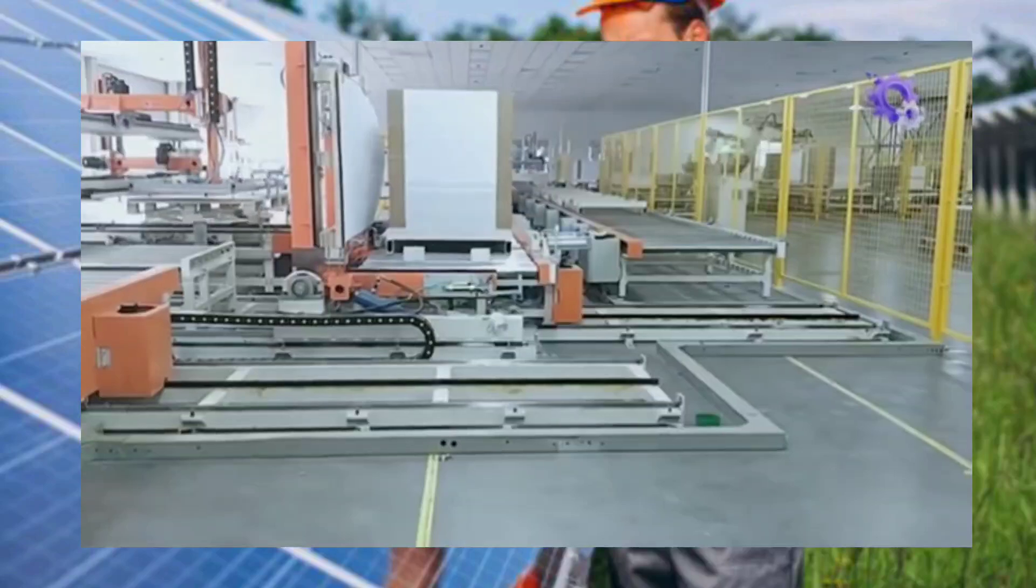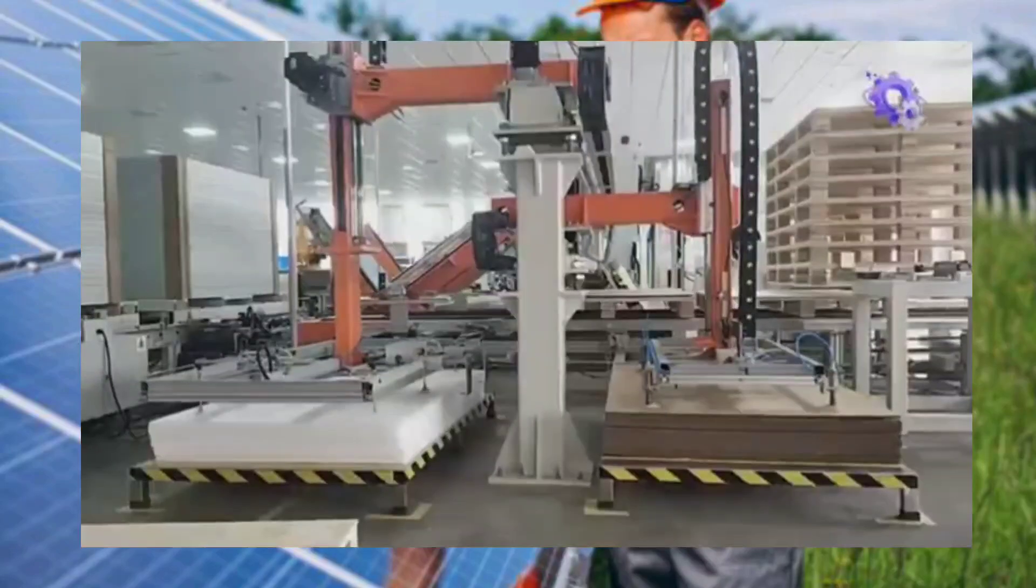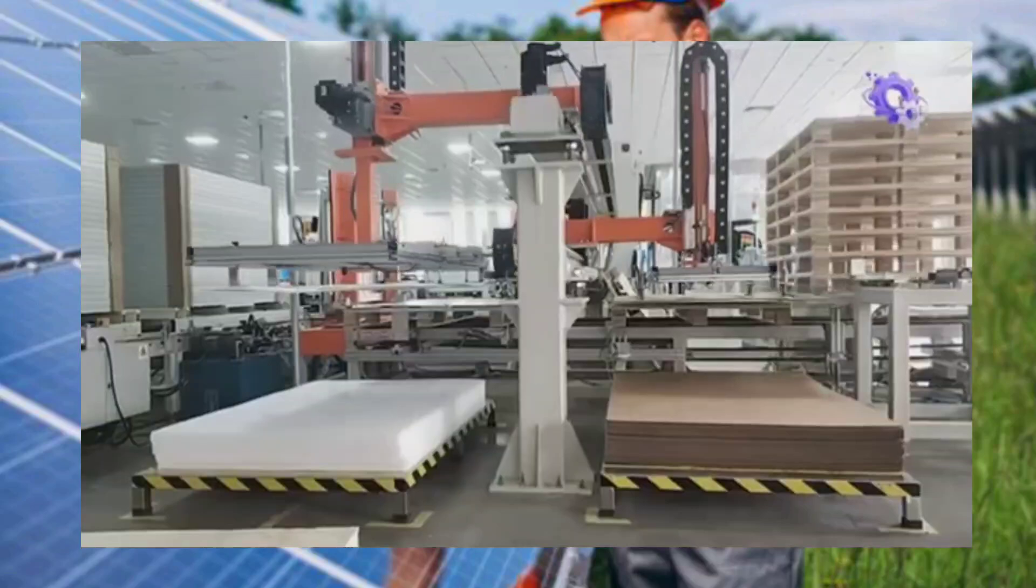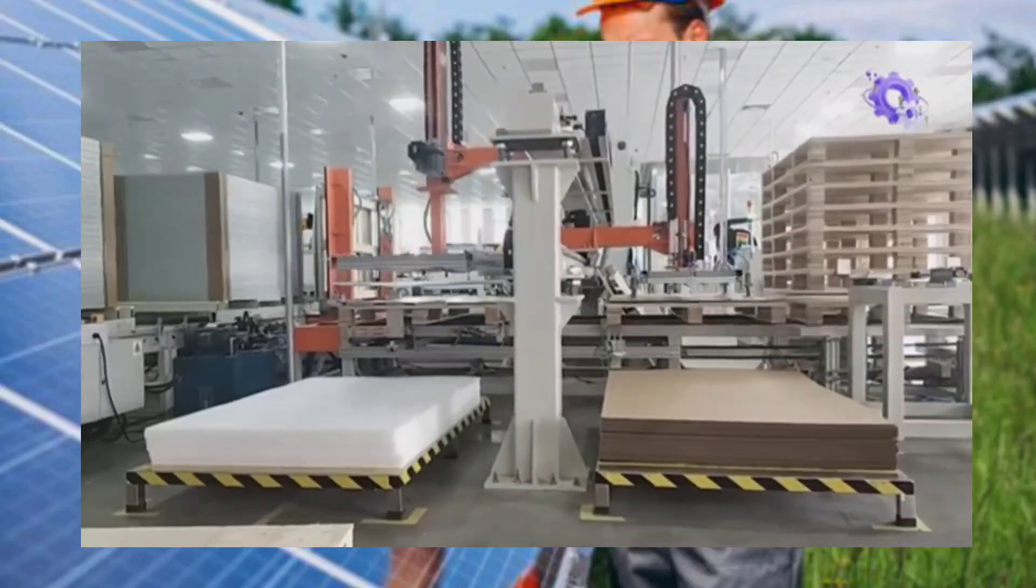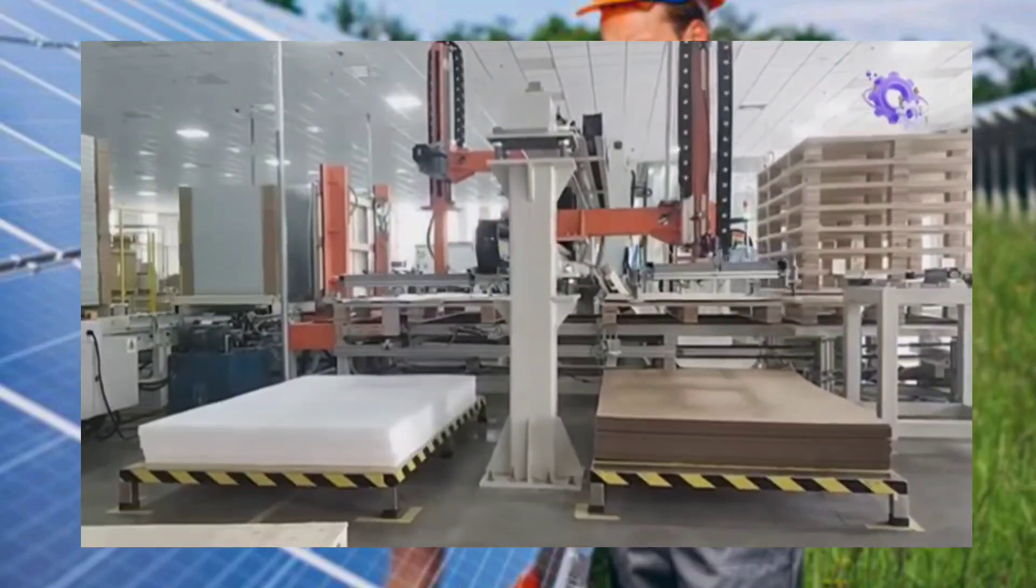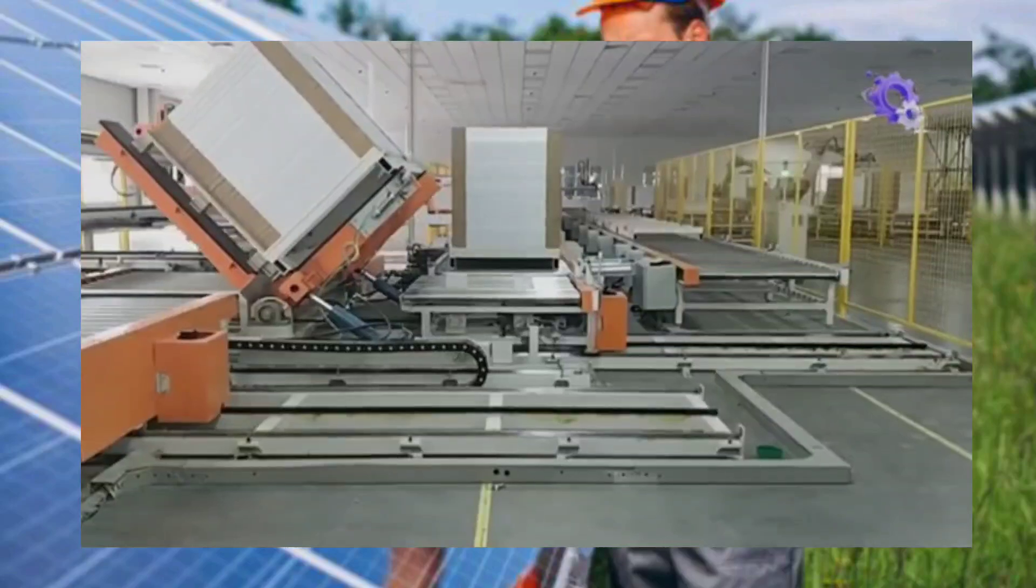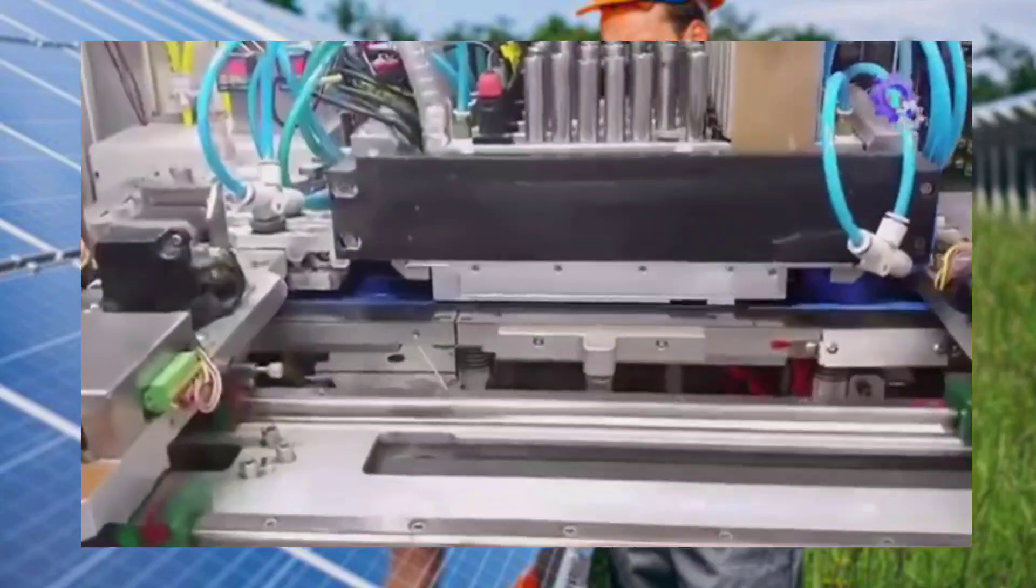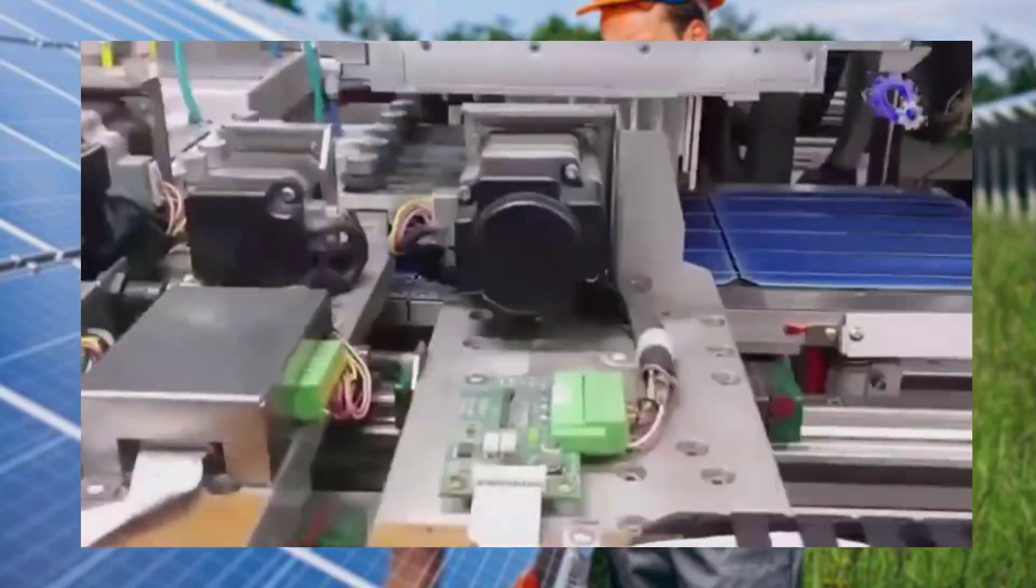Once testing and quality control are completed, packaging materials are carefully selected to provide adequate protection during transportation and storage. Solar panels are typically shipped in pallets or containers, with appropriate labeling and documentation. Having the knowledge on commercial panels makes this next step of your pursuit interesting.